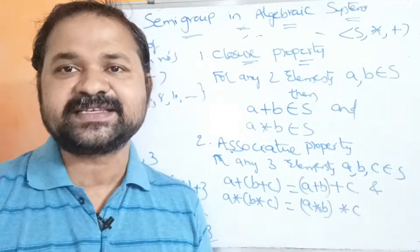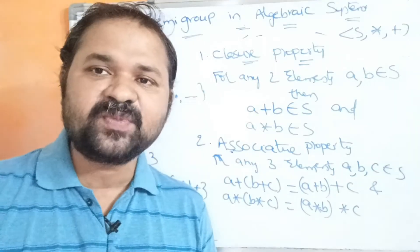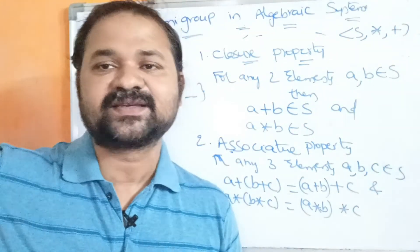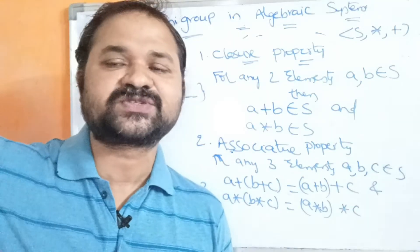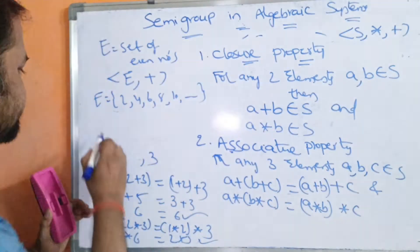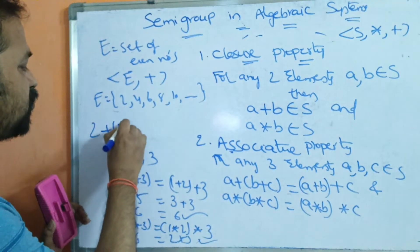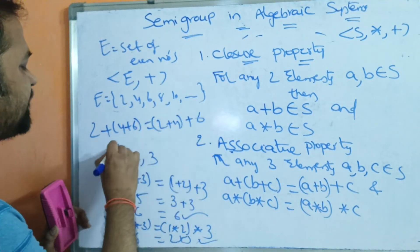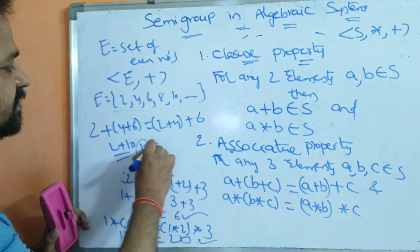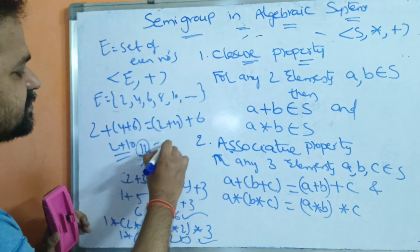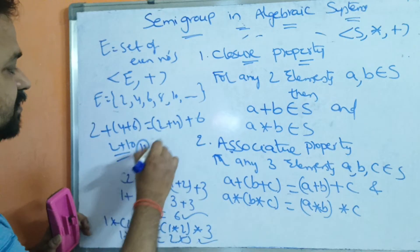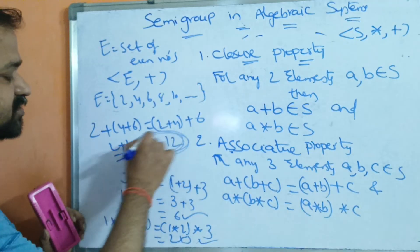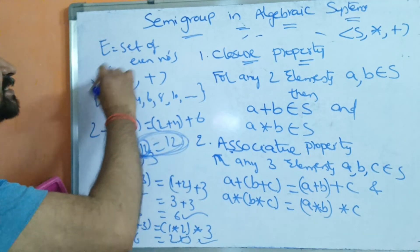Now let us check whether associative property is satisfied. Take three elements: 2, 4, 6. Then 2 plus (4 plus 6) equals (2 plus 4) plus 6: that is 2 plus 10 equals 6 plus 6, so 12 equals 12. So associative property is satisfied. Since both properties hold, we can say that this is a semi-group.